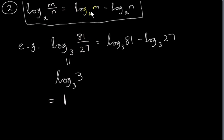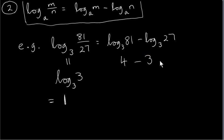Now these are very contrived examples just to illustrate these properties — I'm picking numbers that are easy to work with. Looking at the right hand side: what is log of 81 to base 3? That's actually 4, because 3 to the power of 4 is 81. Log of 27 to base 3 is 3, because 3 to the power of 3 is 27. And we get 1. So both sides are equal. The log of a fraction equals the log of the numerator, which is 81, minus the log of the denominator, which is 27.